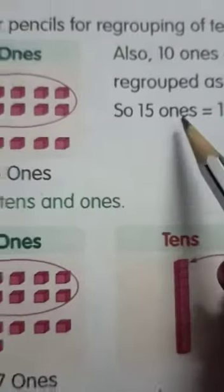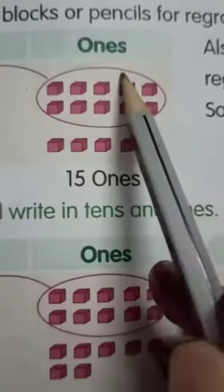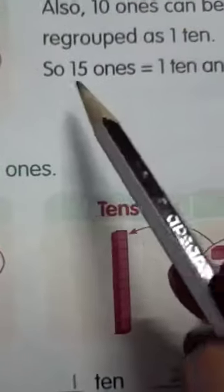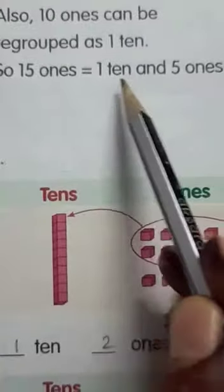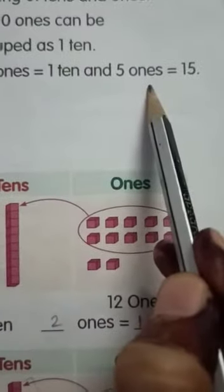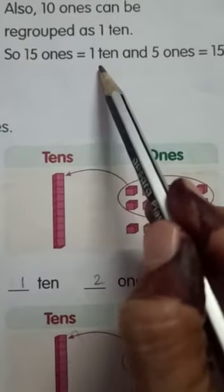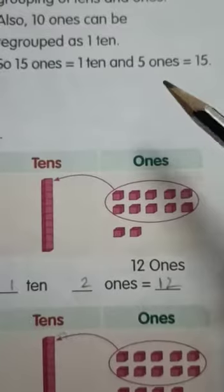So, this 15 ones can be written as, this 10 ones, we are regrouping it as 1 ten and 5 ones. So, 15 ones is equals to 1 ten and 5 ones.